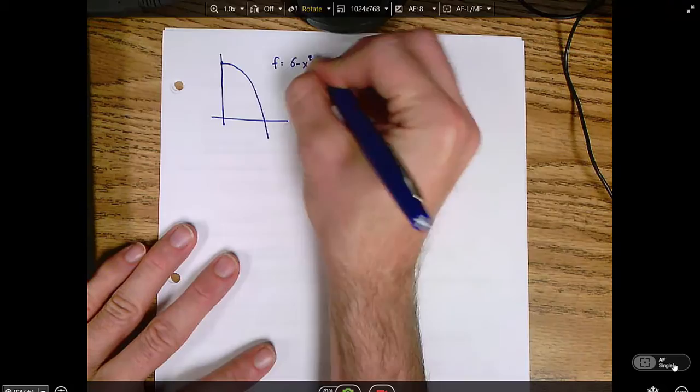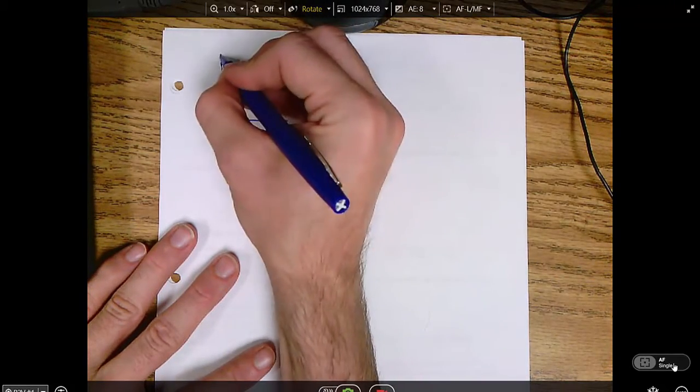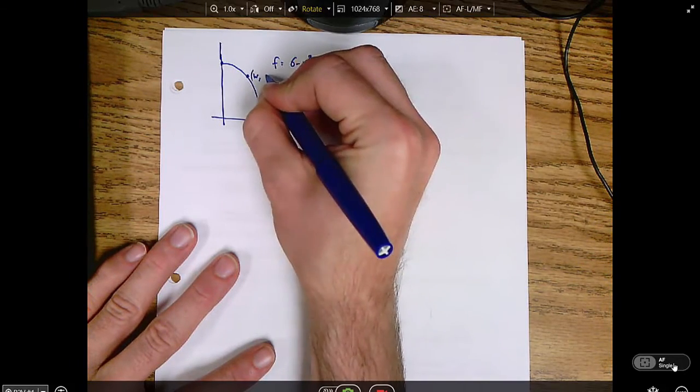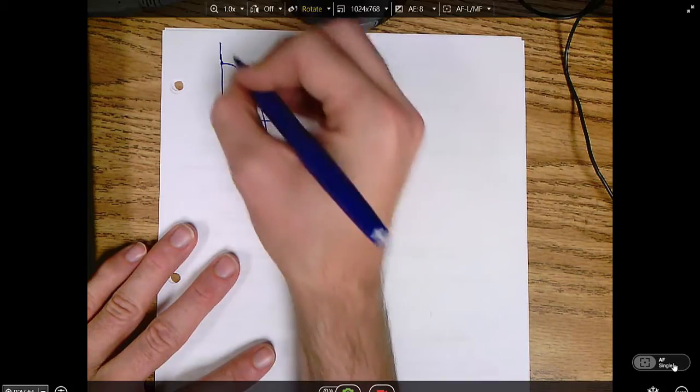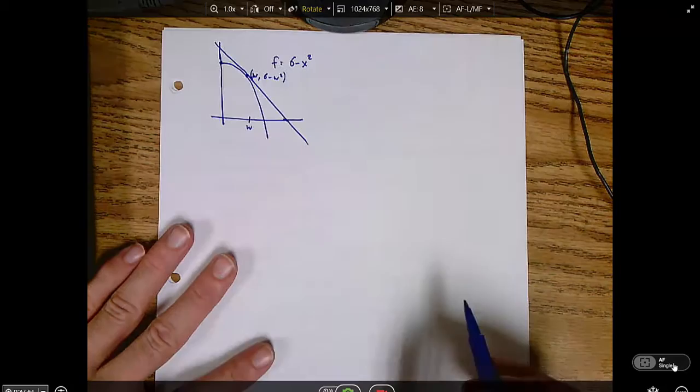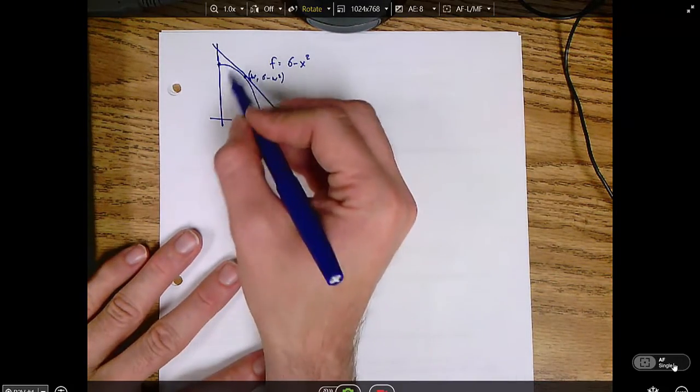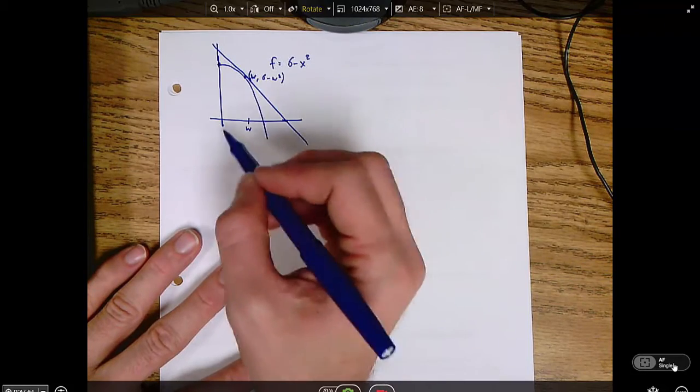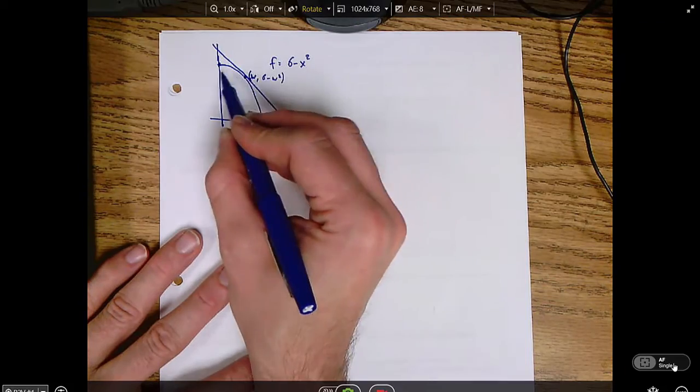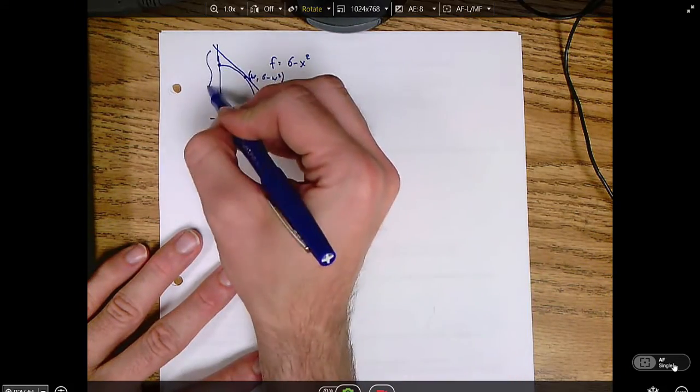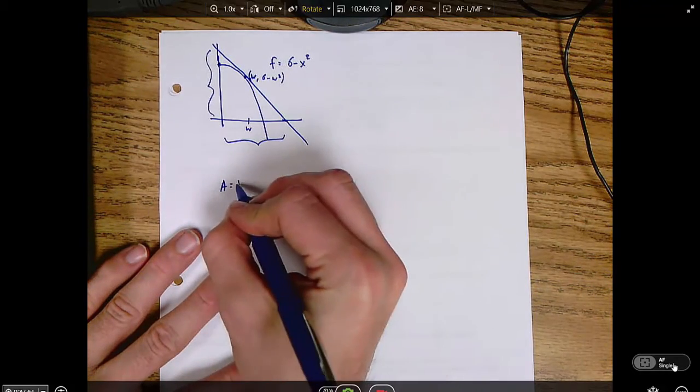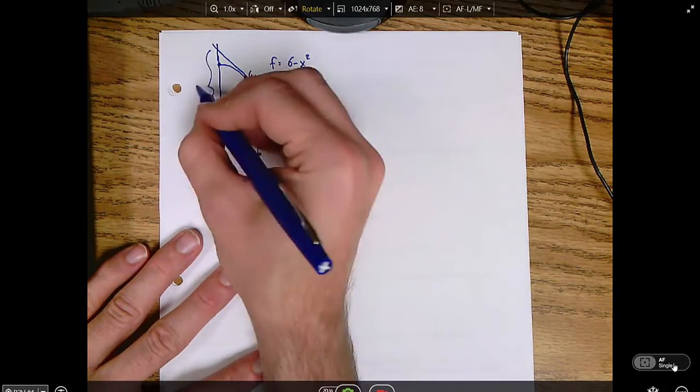So here is the problem. We had this curve here, f was 6 minus x squared. And we were going to choose a point at some x coordinate w, so that point is now at w, 6 minus w squared. The equation for the area of a triangle is 1 half base times height, so that's base, that's height.